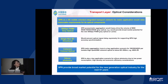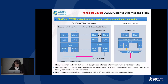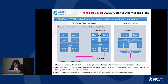Regarding FlexE and DWDM, they enable flexible expansion and segmentation of bandwidth. FlexE supports bandwidth exceeding the physical interface rate through multiple interface bonding. Adding DWDM not only provides single-fiber large bandwidth capability, but also combines DWDM channels to flexibly increase bandwidth on demand. FlexE also supports sub-interface channelization with N times 5G bandwidth to achieve network slicing.